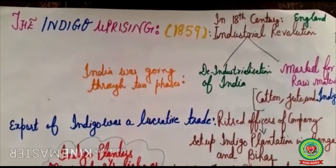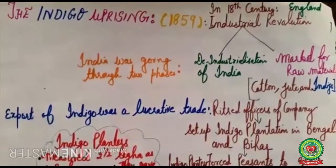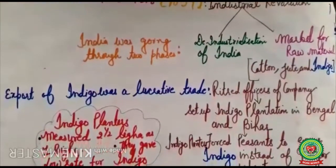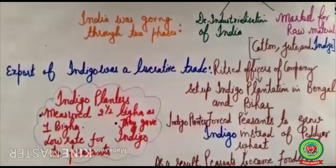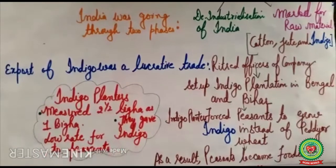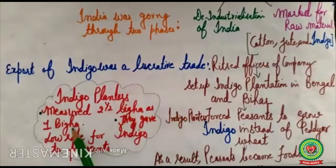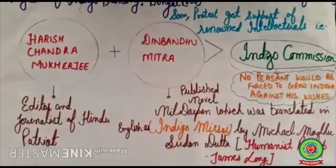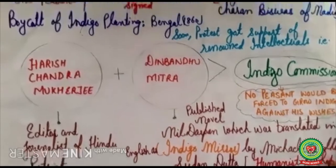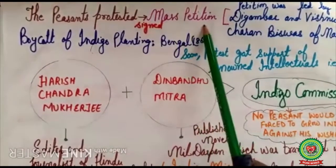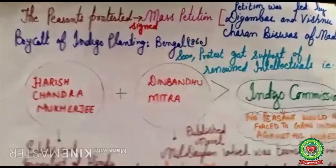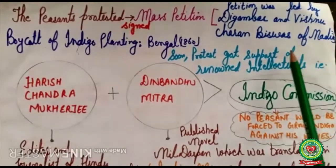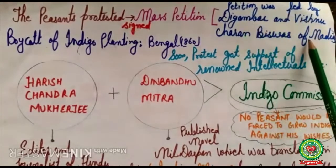Retired officers of the East India Company set up indigo plantations in Bengal and Bihar. The indigo planters forced the peasants to grow indigo instead of paddy or wheat, and as a result the peasants became foodless. These indigo planters also measured two and a half bighas as one bigha and gave low rates for indigo to the peasants. So the peasants protested and signed a mass petition — a written request — led by Digambar and Vishnu Charan Biswas of Nadia, who were local zamindars.